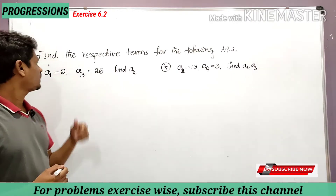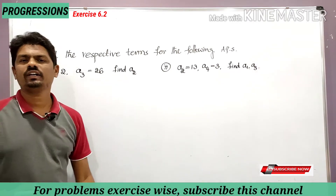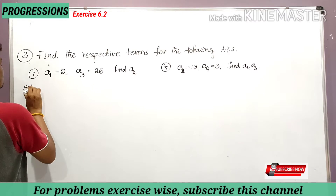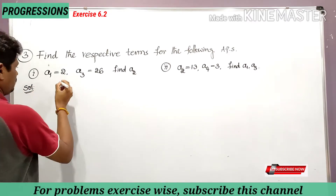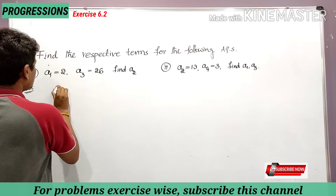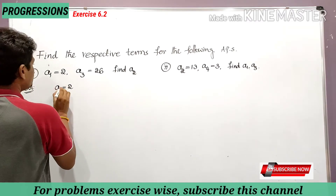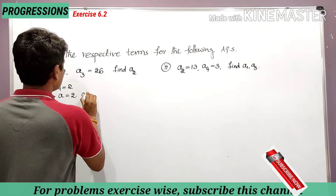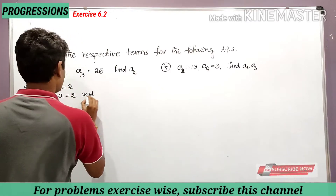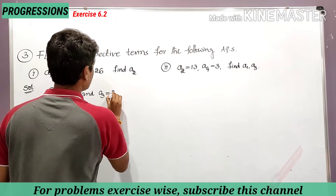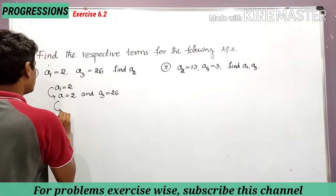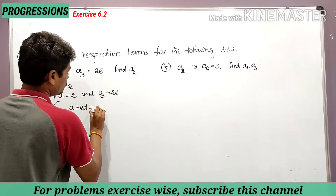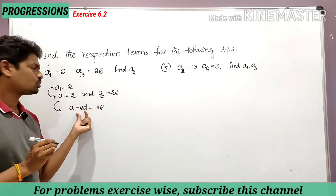He has given a1 and a3, and is asking us to find a2. We can solve this very easily. a1 is equal to 2, and a1 itself is known as 'a', so a is equal to 2. a3 is equal to 26. a3 can be written as a plus 2d, so a plus 2d is equal to 26.